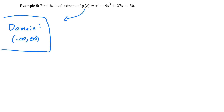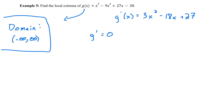So with domain negative infinity to positive infinity, we don't really need to worry about it. We can start finding the critical numbers — we need the derivative first. So g prime of x will be 3x squared minus 18x plus 27. For critical numbers, as always, we want to find places where our derivative is equal to 0 and places where our derivative does not exist. So if I take my derivative and set it equal to 0, we'll have 3x squared minus 18x plus 27 equals 0.